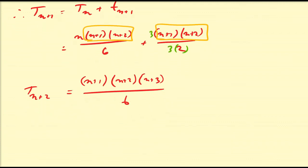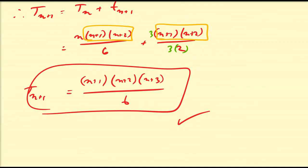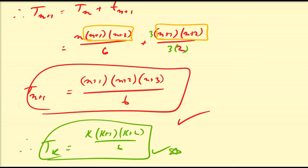That gives us n plus 1 times n plus 2 times n plus 3 over 6, which is exactly what we needed to prove. So the kth tetrahedral number equals k times k plus 1 times k plus 2, all over 6. I hope this gives you basic practice using mathematical induction to prove relationships involving positive integers, and basic connections between triangular numbers, tetrahedral numbers, sums of integers, and sums of squares.